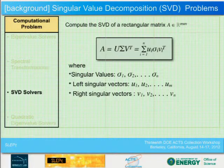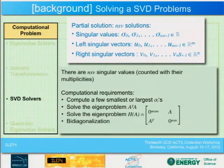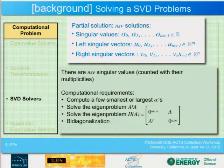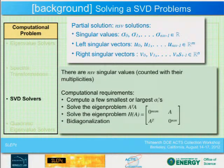Another class of solvers covers singular value decomposition, where we have a set of singular values, left vectors, and right singular vectors. The solution is a set of NSV singular values and corresponding right and left singular vectors. Computational requirements include computing just a few, the smallest or largest singular values, solving an associated eigenproblem, or using bidiagonalization options also available in SLEPC.